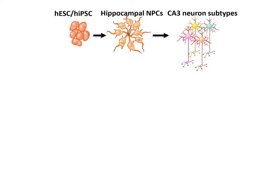The hippocampus is an ideal brain structure for modeling the neuronal network. It is a highly plastic region, sensitive to environmental stimuli, and shows vulnerability to a growing list of neurological disorders.